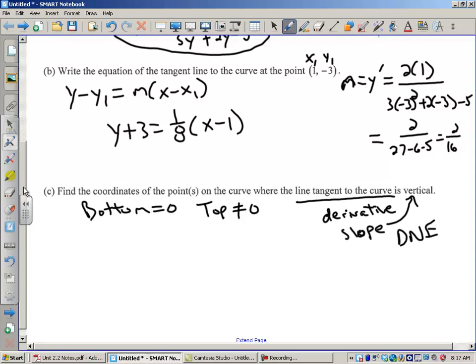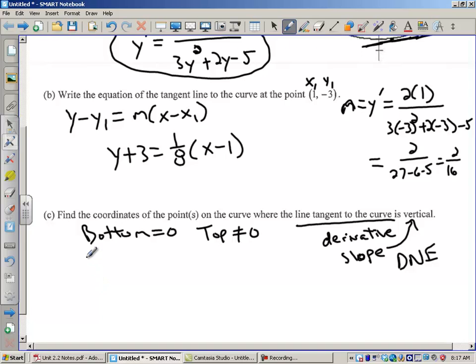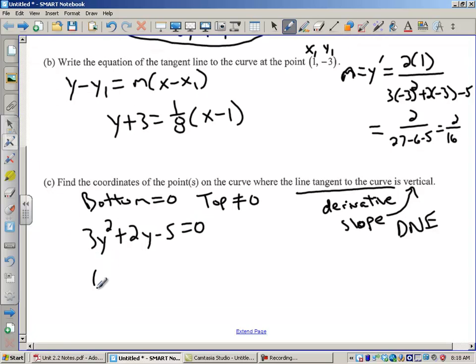So what we're going to do is we're going to set the bottom equal to 0 and verify it does not make the top equal to 0. So I have 3y squared plus 2y minus 5 equals 0. So I've got to bust out the factoring skills. So that's going to be 3y and y. And I did this earlier, and I worked this out to be plus 5 for this factor and minus 1 for this factor, set it equal to 0. And so I get y equals 1, and I get y equals negative 5/3.